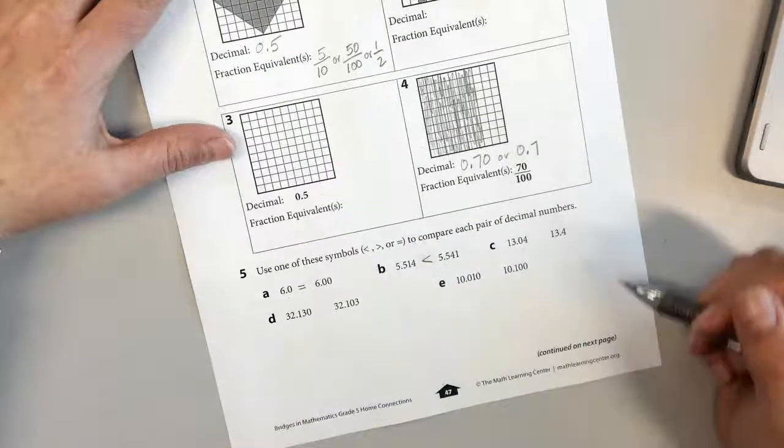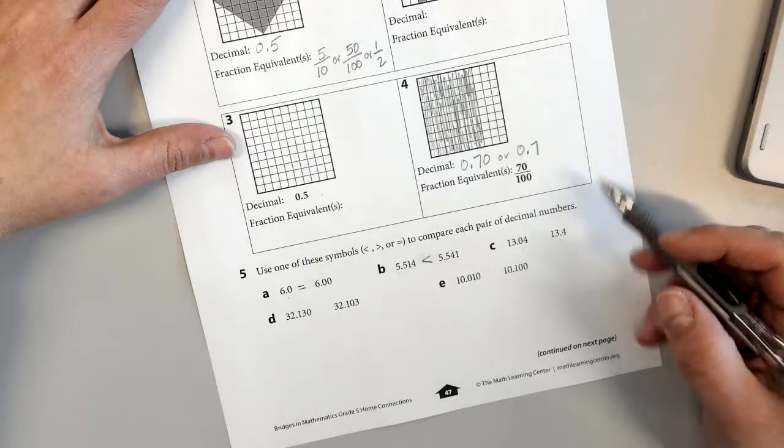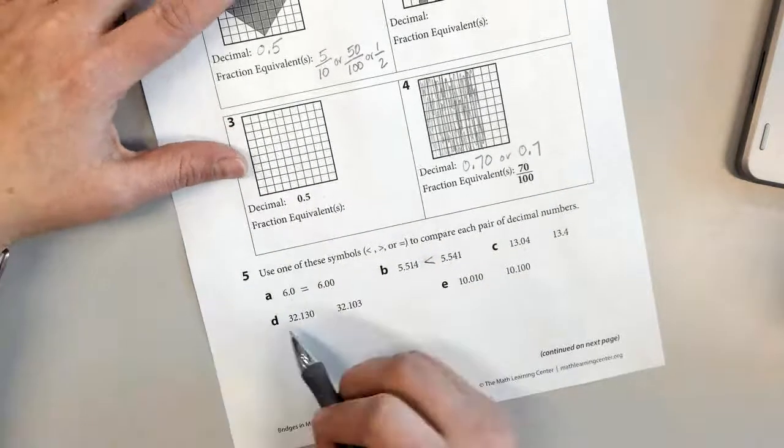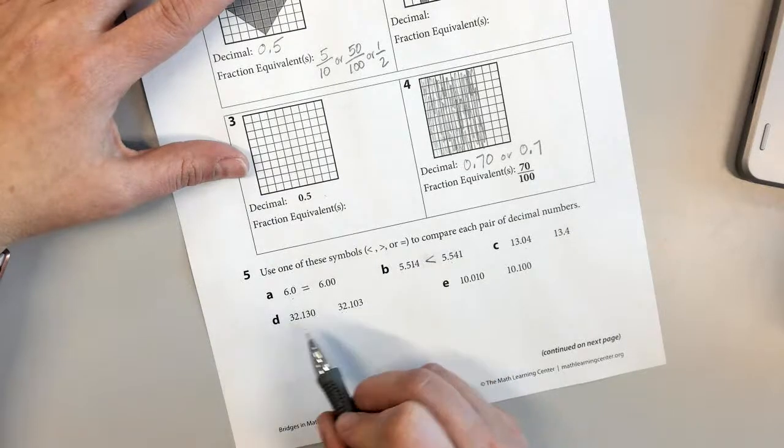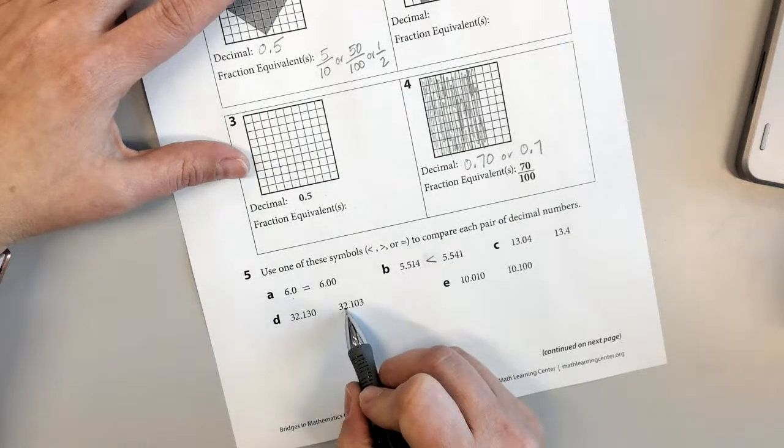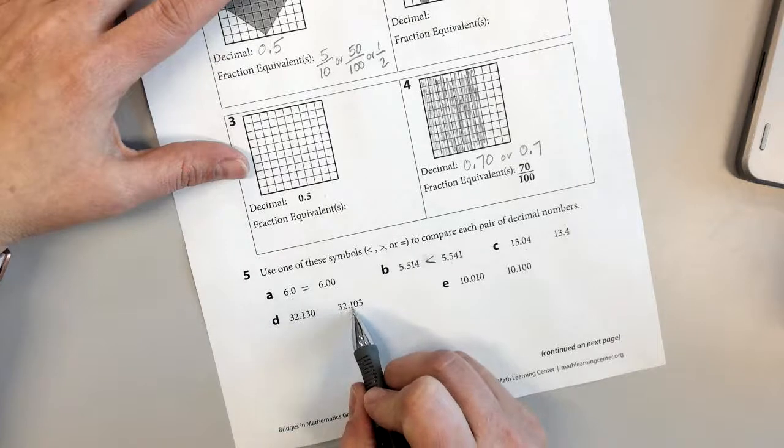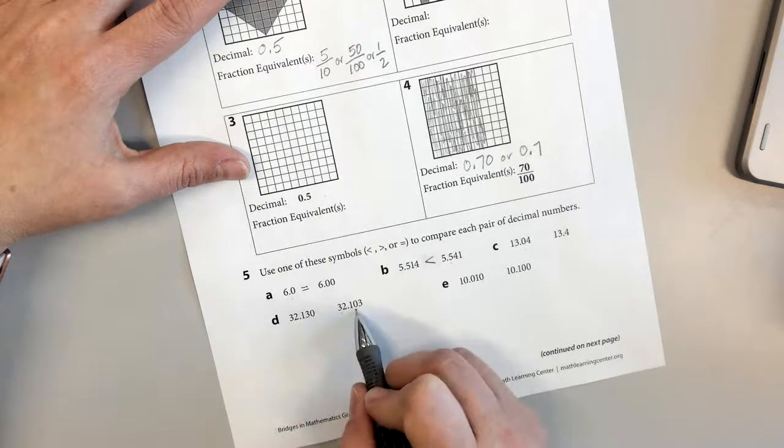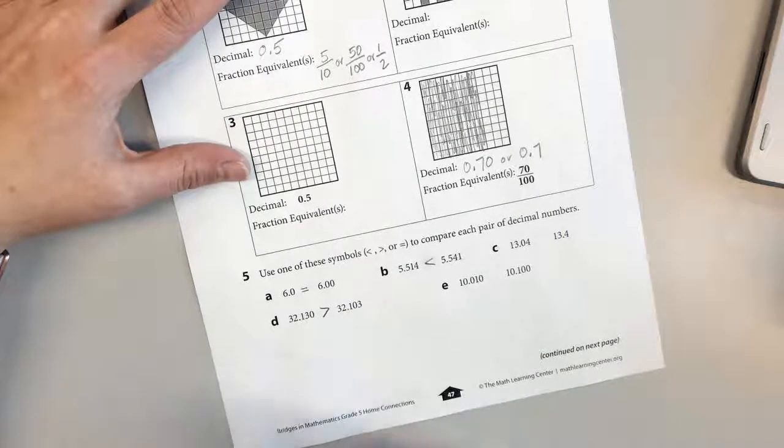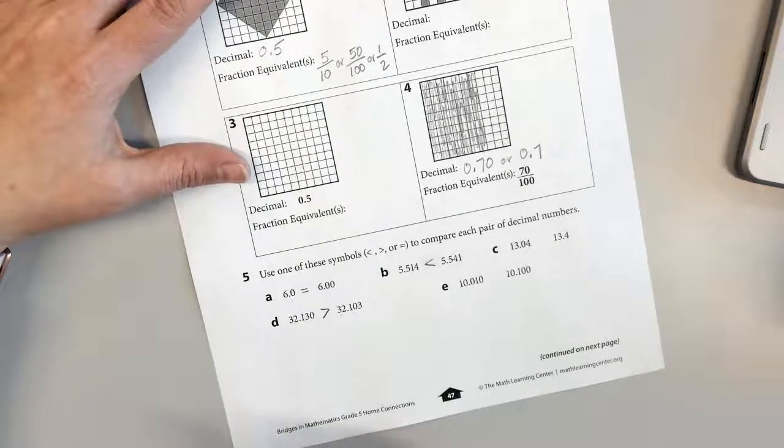And I'm going to do the same thing for all of the rest of these. Let's look at D. The tens, there's a number in the tens place on both. They're the same. The ones are the same. The tenths are the same. The hundredths, oh, this one is bigger, so that means that that number is greater. So you do E on your own.